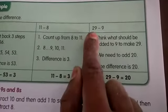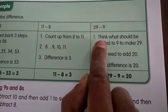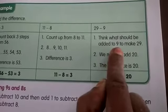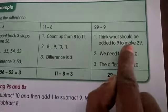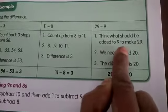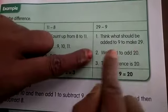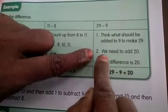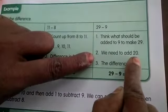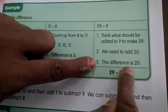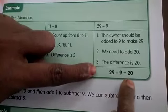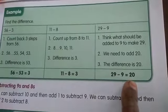One more. 29 minus 9. Think. What should be added to 9 to make 29? So think children. For 9, what we have to make for 29 to make? We need to add 20. So the difference is 20. So 29 minus 9 is 20.